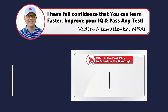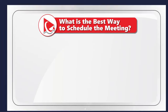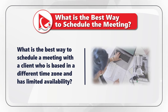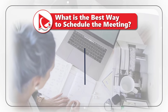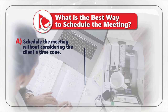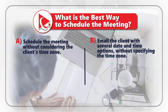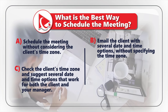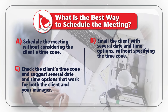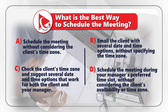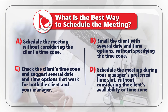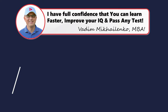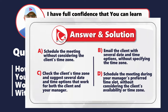Here is a question to determine how well you can work with others. You need to determine the best way to schedule a meeting with a client who is based in a different time zone and has limited availability. Choice A: Schedule the meeting without considering the client's time zone. Choice B: Email the client with several date and time options without specifying the time zone. Choice C: Check the client's time zone and suggest several date and time options that work for both the client and your manager. Choice D: Schedule the meeting during your manager's preferred time slot without considering the client's availability or time zone.